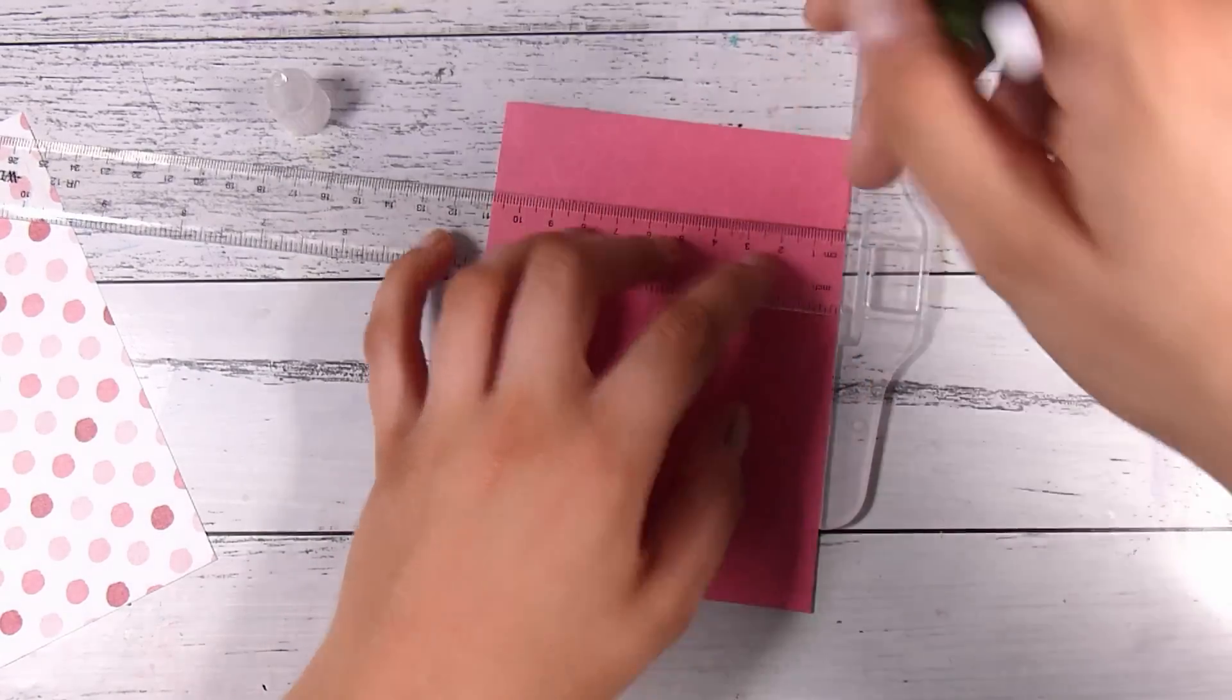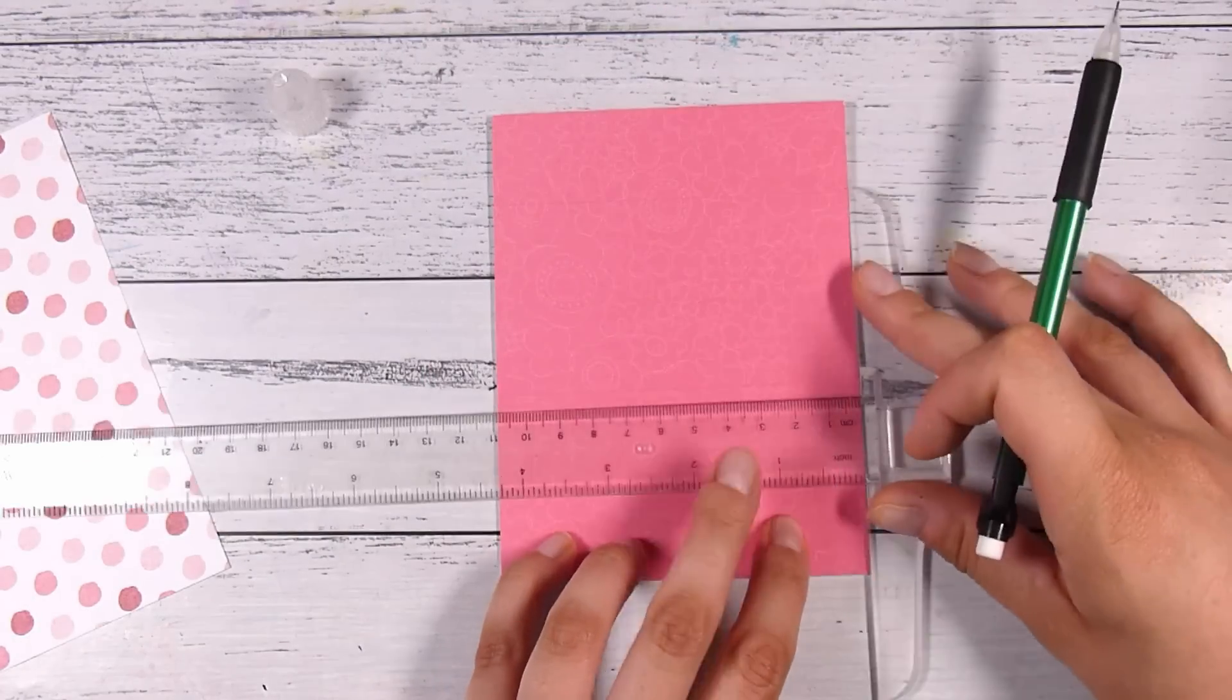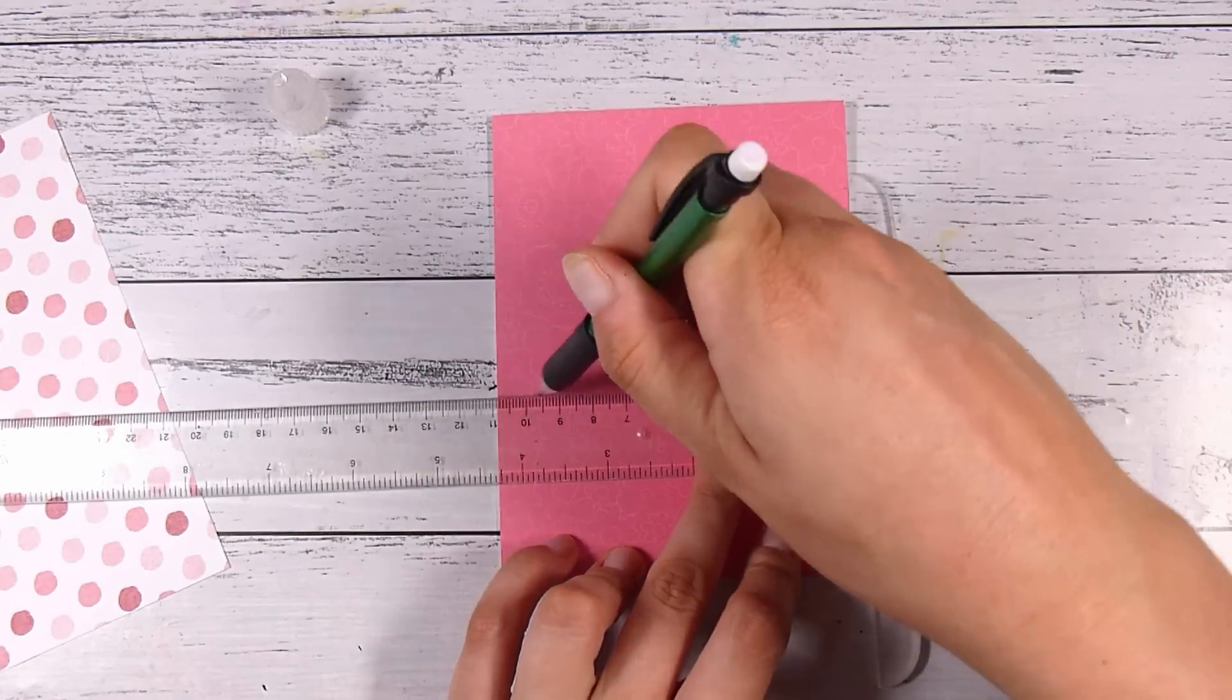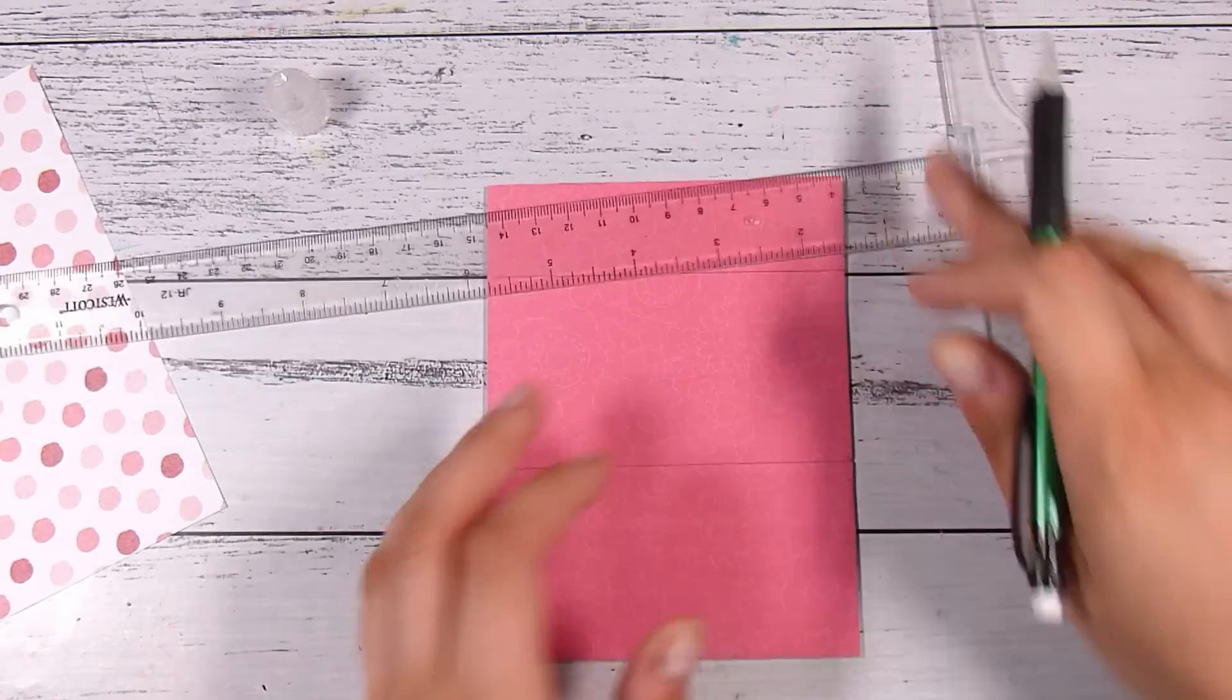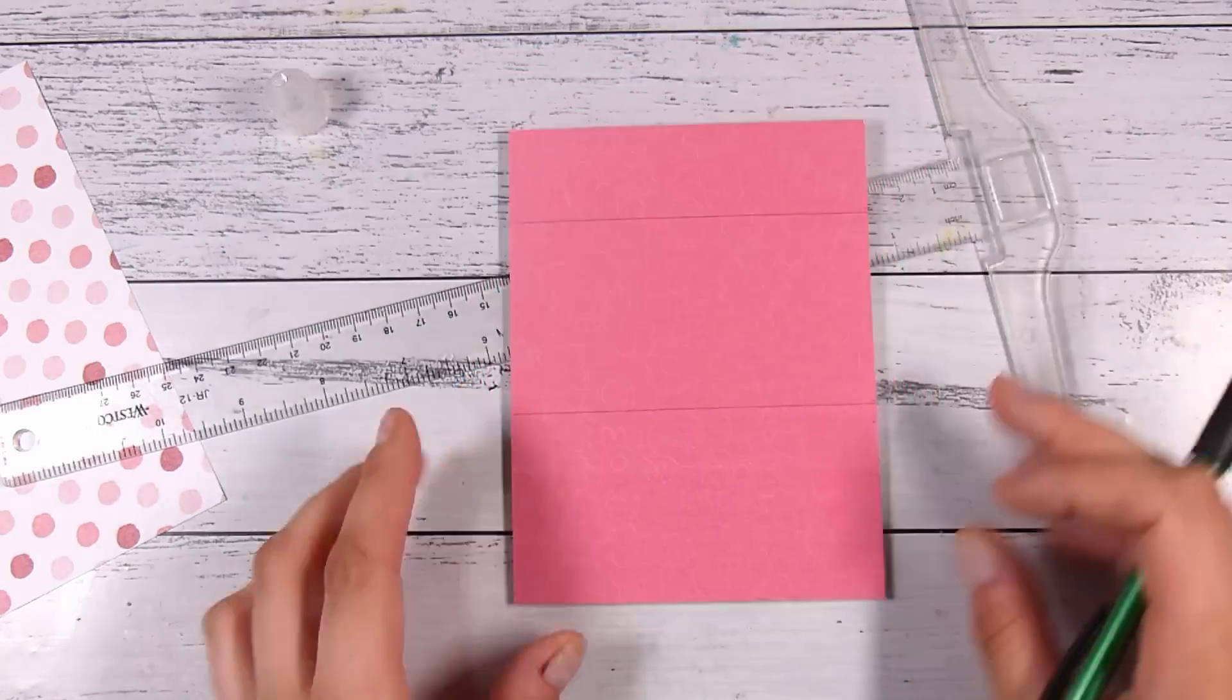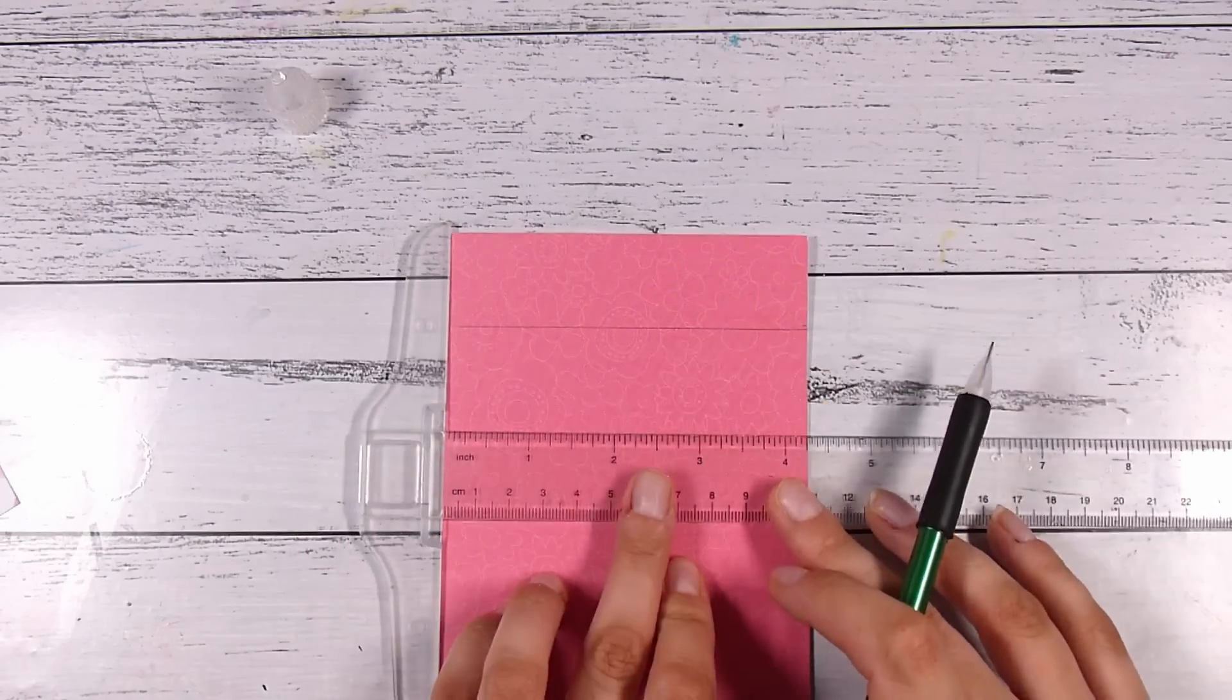For me I generally draw kind of a really light pencil line, and then when I realize that you guys can't see this I'm going to make it a little bit darker. When I'm doing a project I usually wouldn't make really dark pencil lines, but given that I'm trying to show you guys then I am just going to make them a little bit darker.